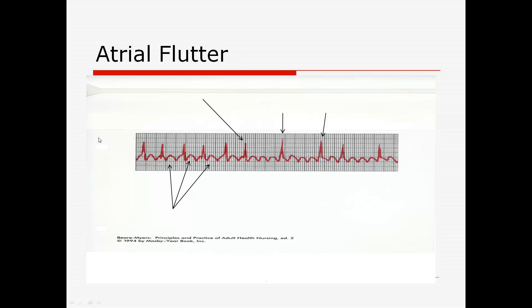Atrial flutter can look very regular if we have the same number of P waves between each QRS. But atrial flutter is not originating from the sinus rhythm — it's like the atrium is basically fluttering. They're just fluttering away, but once in a while a QRS makes it through. If we added this up over six seconds, it would be a very irregular rhythm. On a heart monitor it might say 80 beats, then 90, then 75, then 100. Atrial flutter — saw tooth — is an abnormality of the atria not doing what they're supposed to be doing. We've got too many atrial contractions; it's just fluttering.